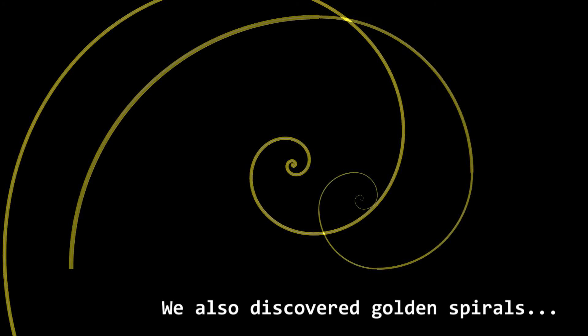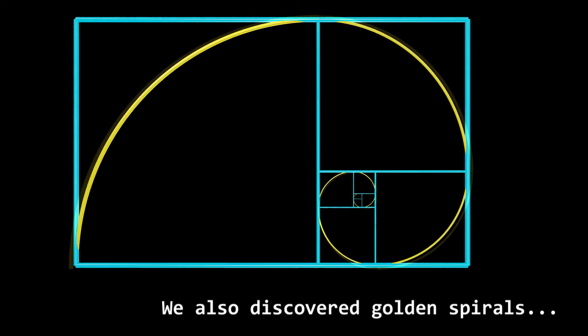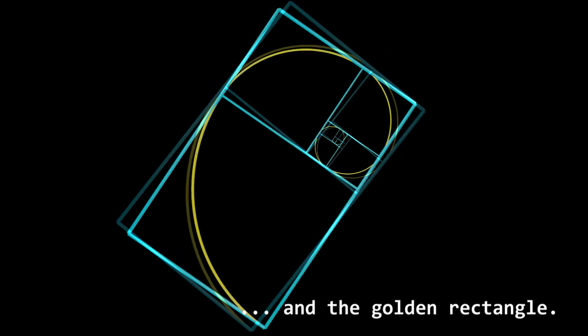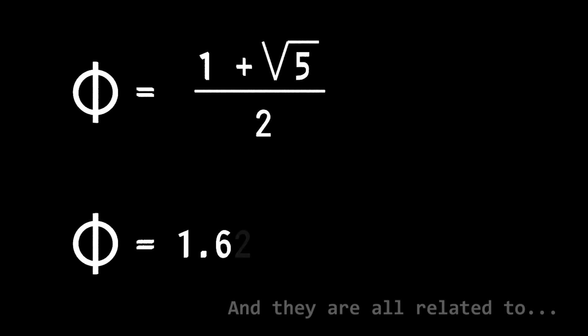We also discovered golden spirals, and a golden rectangle, and they are all related to the magic of number Phi.